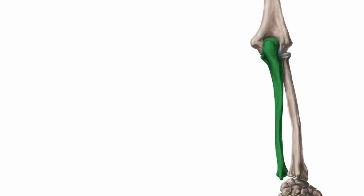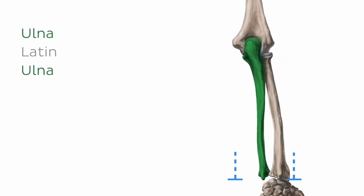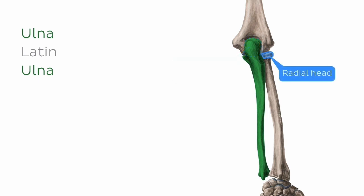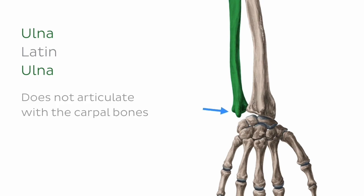As I mentioned earlier, the ulna is the longer of the two bones of the forearm. It articulates proximally with the trochlea of the humerus, as well as with the head of the radius. Distally, it again articulates with the radius; however, it does not articulate directly with any of the carpal bones of the wrist joint.